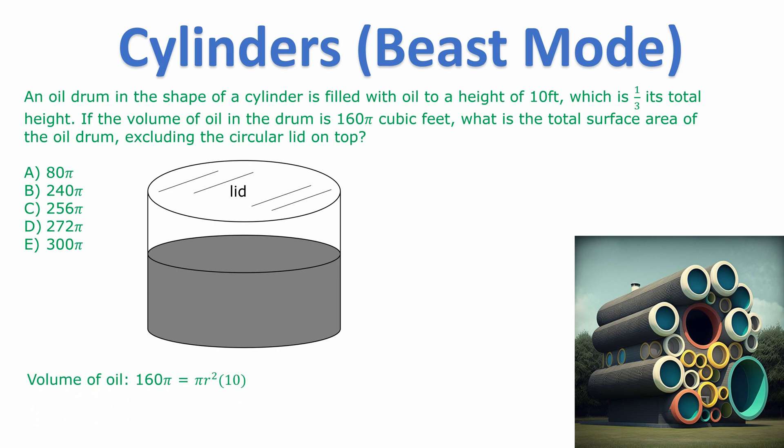In other words we know that volume of oil in the tank, the grey that you can see on screen, which is 160π, is equal to the formula which remember is πr² times the height of 10. We can now simplify this and work out the radius.